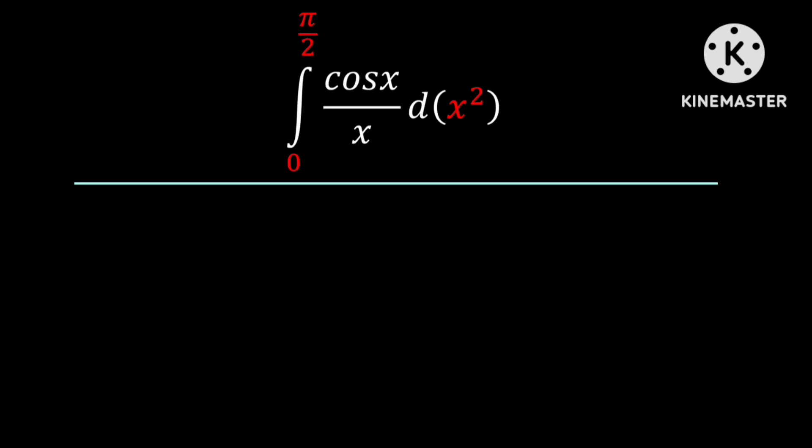But we know that the derivative of x squared with respect to x is equal to 2x, and this implies that d of x squared is equal to 2x multiplied by dx.